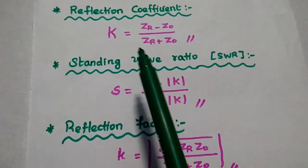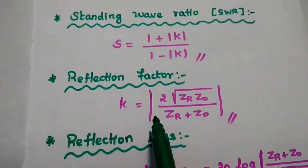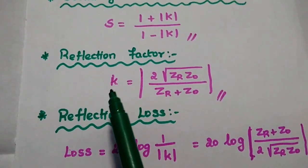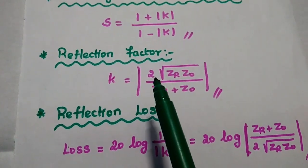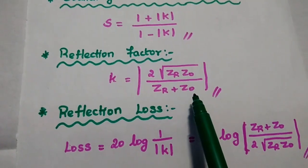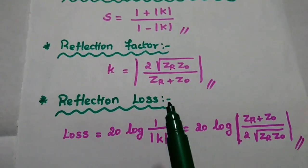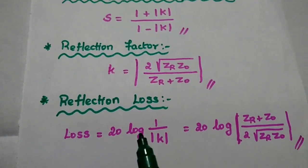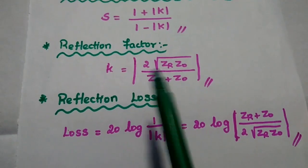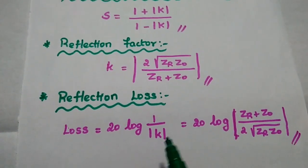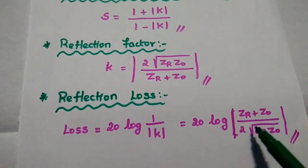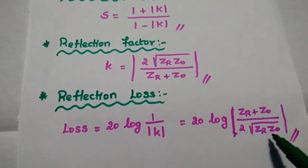K represents the reflection coefficient. The next one is the reflection factor, represented as small k, equal to modulus of 2 times square root of ZR·Z0 divided by ZR plus Z0. The last one is reflection loss, equal to 20 log of 1 by modulus of small k, the reflection factor. It can also be written as 20 log of modulus of ZR plus Z0 divided by 2 times square root of ZR·Z0.